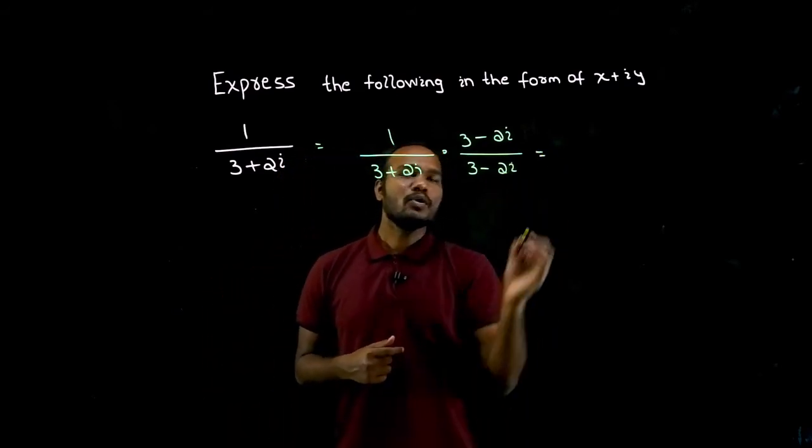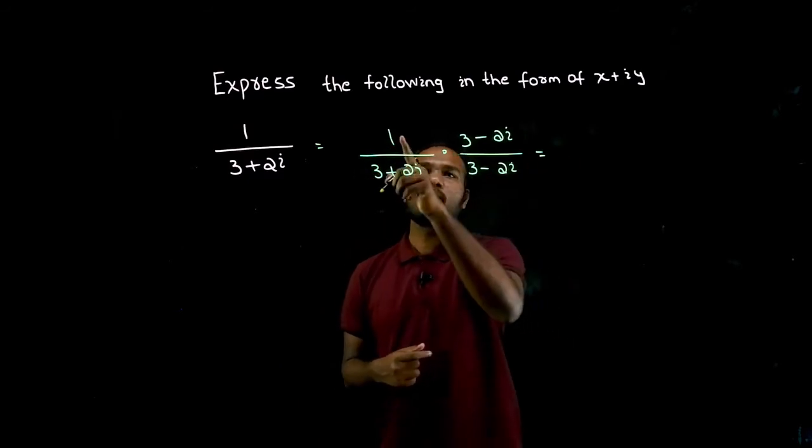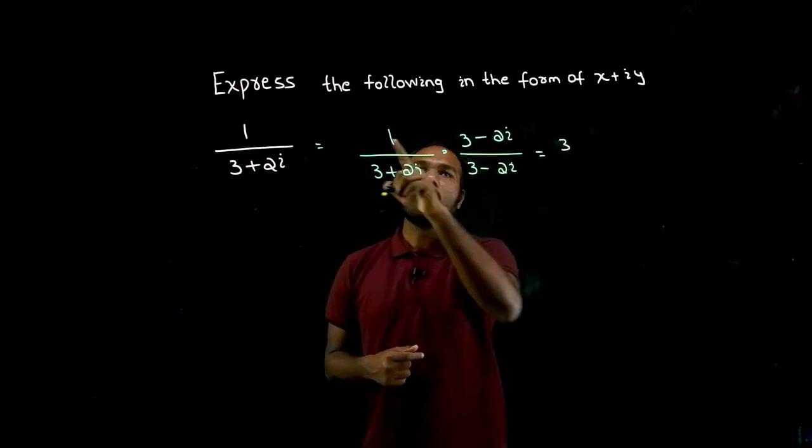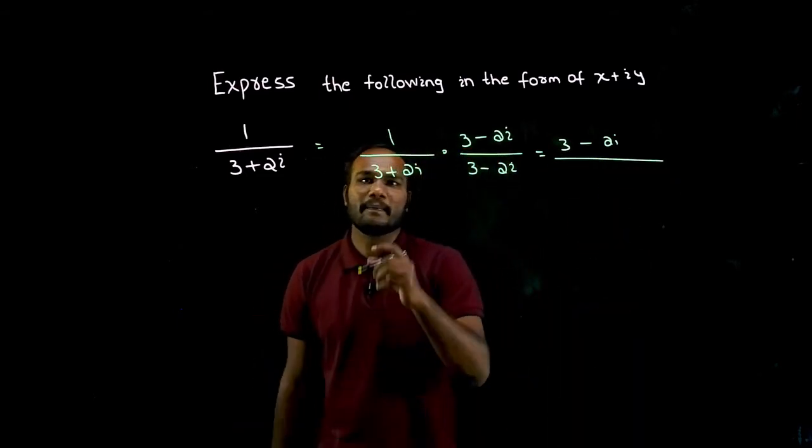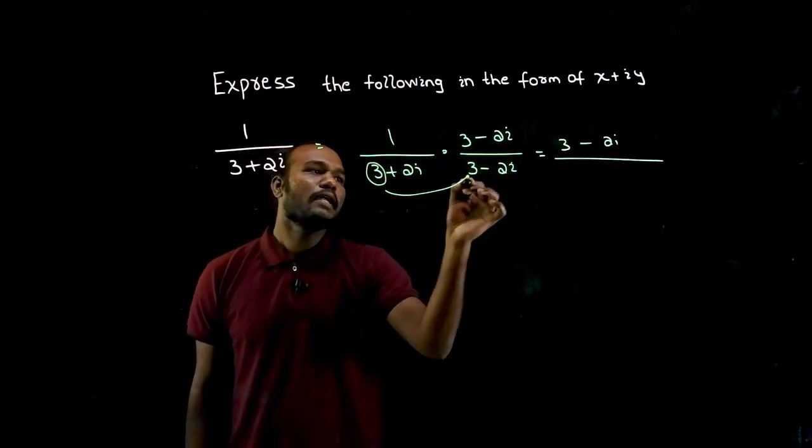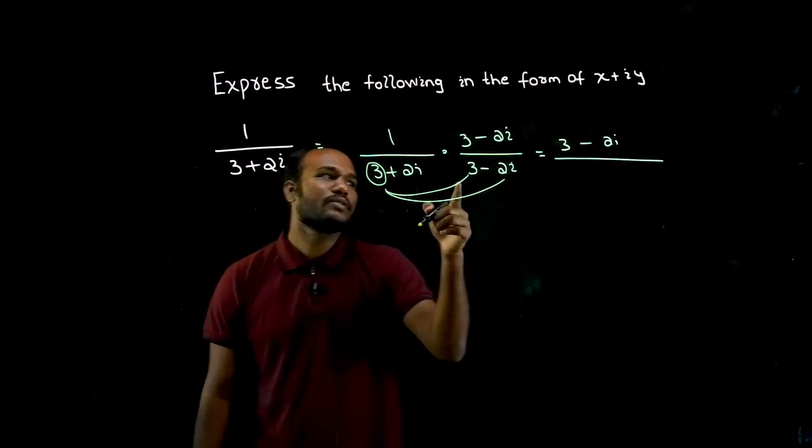Now I have to multiply the numerator. What will be that? 1 into 3 is 3, 1 into minus 2 is minus 2i. Denominator also I should multiply. How to multiply? I have to catch this number and we have to multiply both of this number. 3 into 3 is 9.